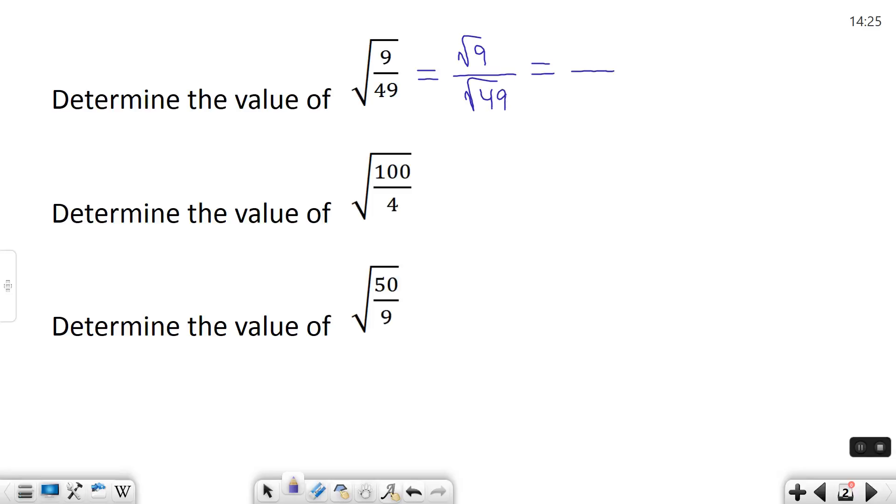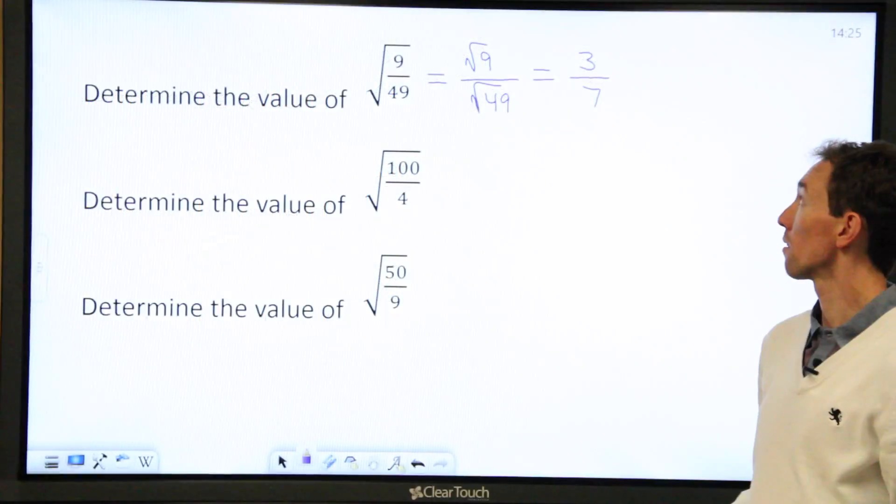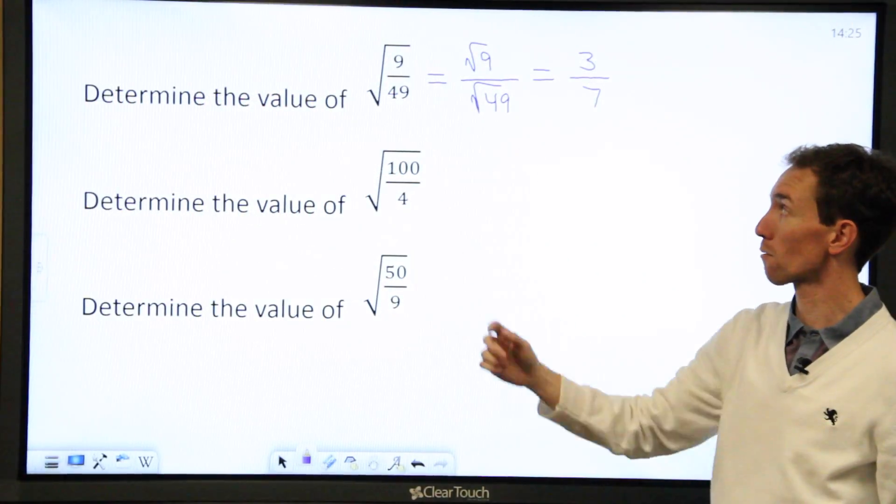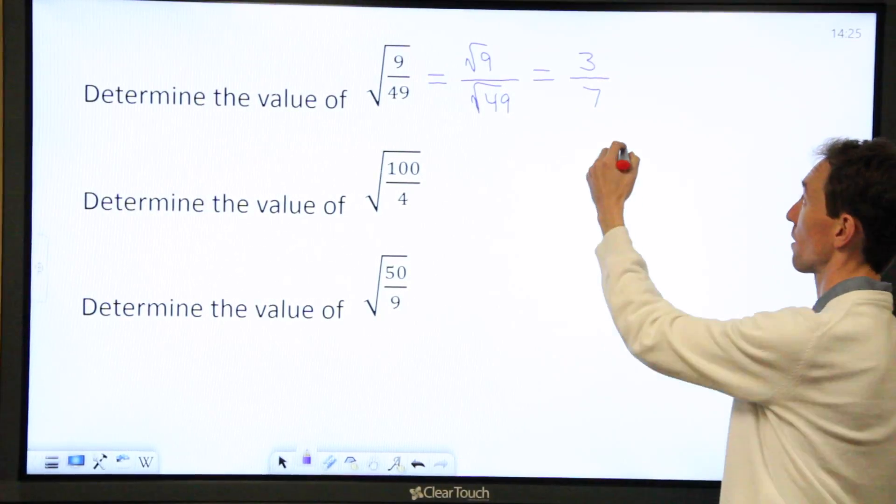The square root of 9 is 3. The square root of 49 is 7. So there you go. The value of the square root of 9 over 49 is 3 over 7.